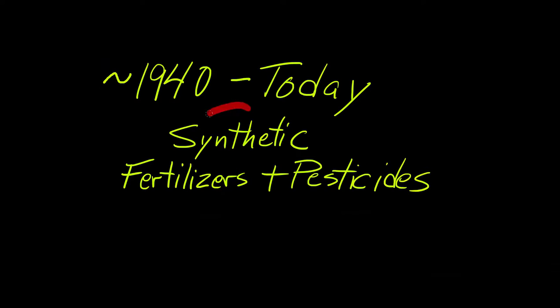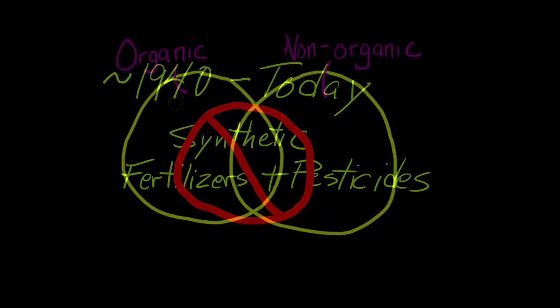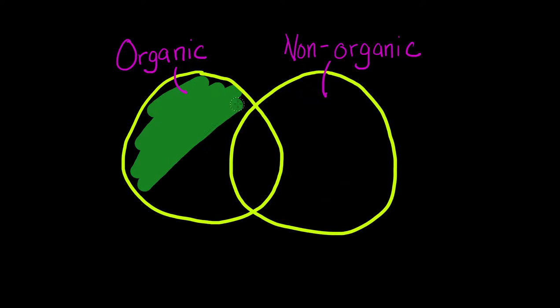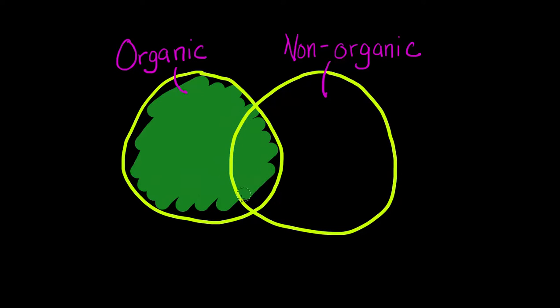From its beginning, organic farming has rejected the use of synthetic fertilizers and pesticides, while it also encourages the use of soil organic amendments, crop rotation, and biological pest control. All these practices are also used by non-organic farmers.